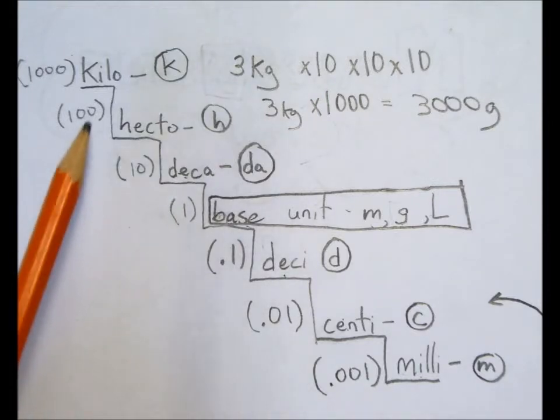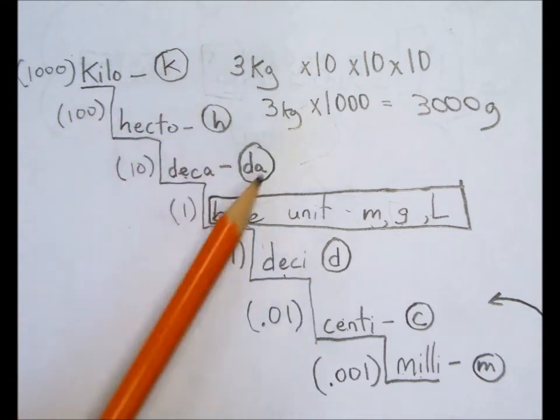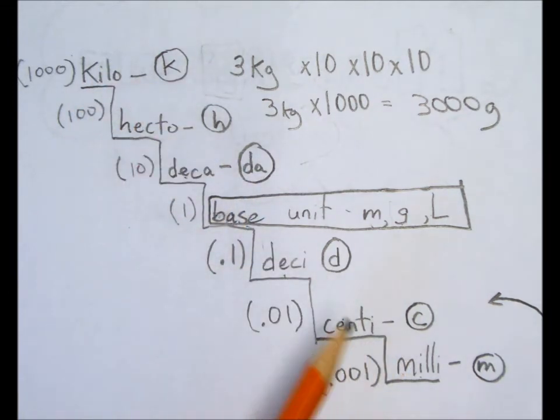So, just to sum up, if you're going from a bigger unit to a smaller unit, you multiply by 10 for each step. If you're going from a smaller unit to a bigger unit, you divide by 10 for each step.